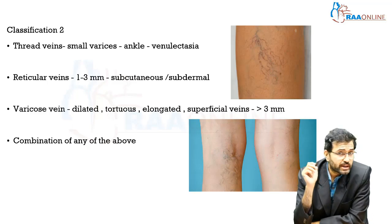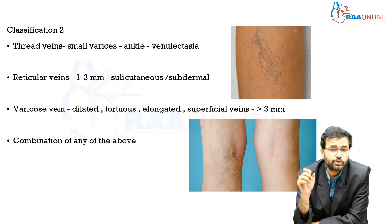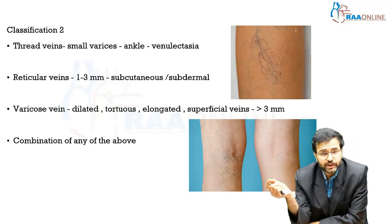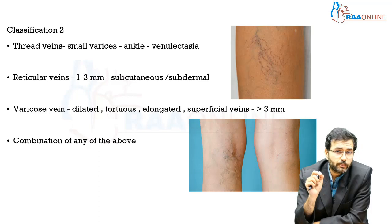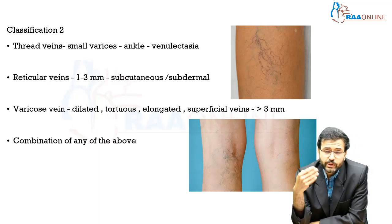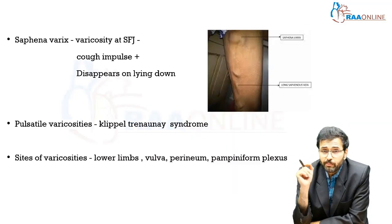Varicose veins proper are defined when veins are more than 3 mm in size — dilated, tortuous, elongated superficial veins. When more than 4 mm, they are called large varicose veins; when less than 4 mm, small varicose veins. A fourth type involves a combination of any of the above.